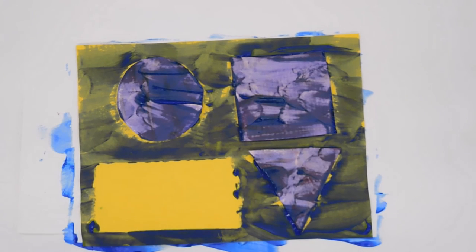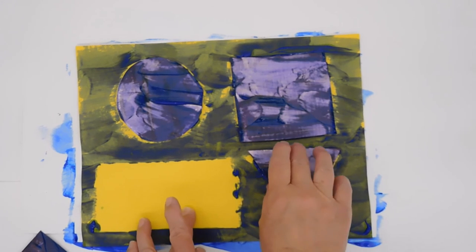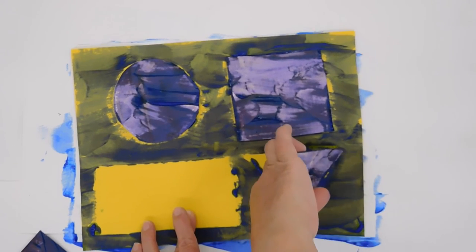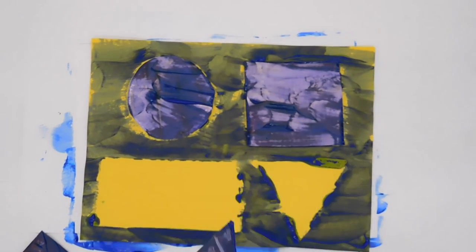So there's the rectangle, as you can see the yellow, it's a yellow rectangle, because that's where the paint did not go on the construction paper. And now we'll do the triangle. There's the upside down triangle shape.